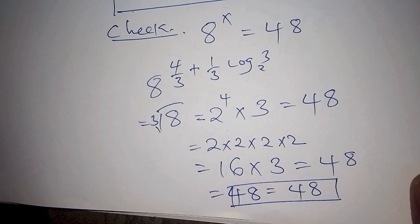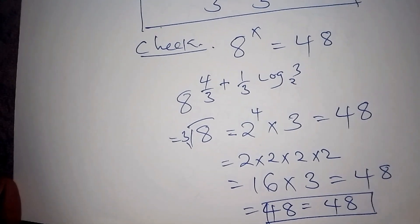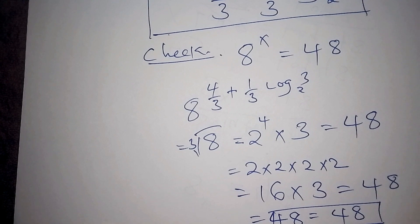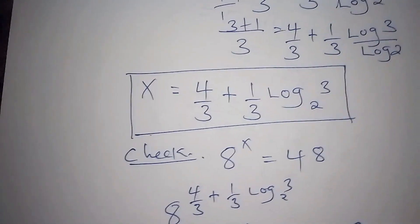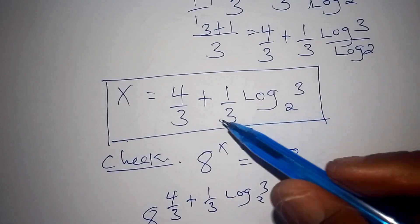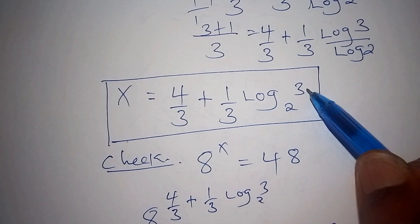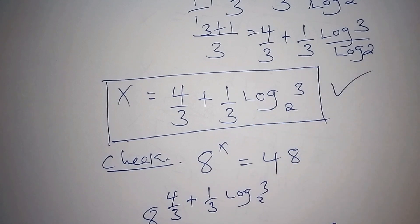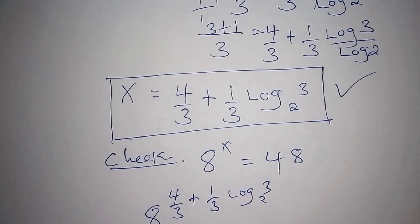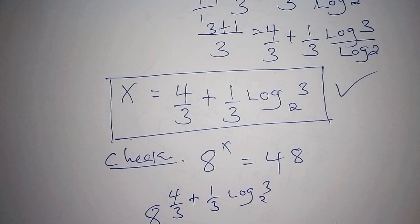We can conclude that our value for x is 4 over 3 plus one-third log of 3 to the base of 2. If you worked it out and got that answer, thumbs up — you got it right! If you find this video helpful, please subscribe to our channel. Thank you and see you in the next video.